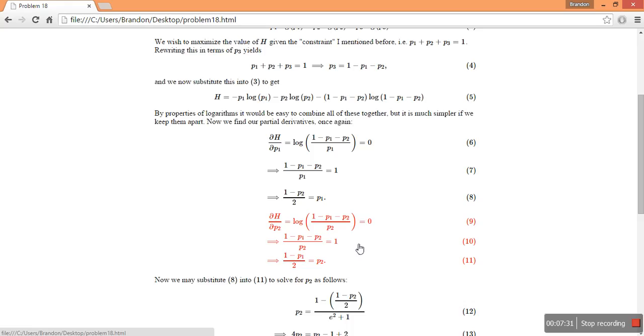And the same thing happens down here in 9, 10, and 11, but we solve for p2 in terms of p1. So we, again, as in the last problem, have two equations and two unknowns. So we can solve for these.